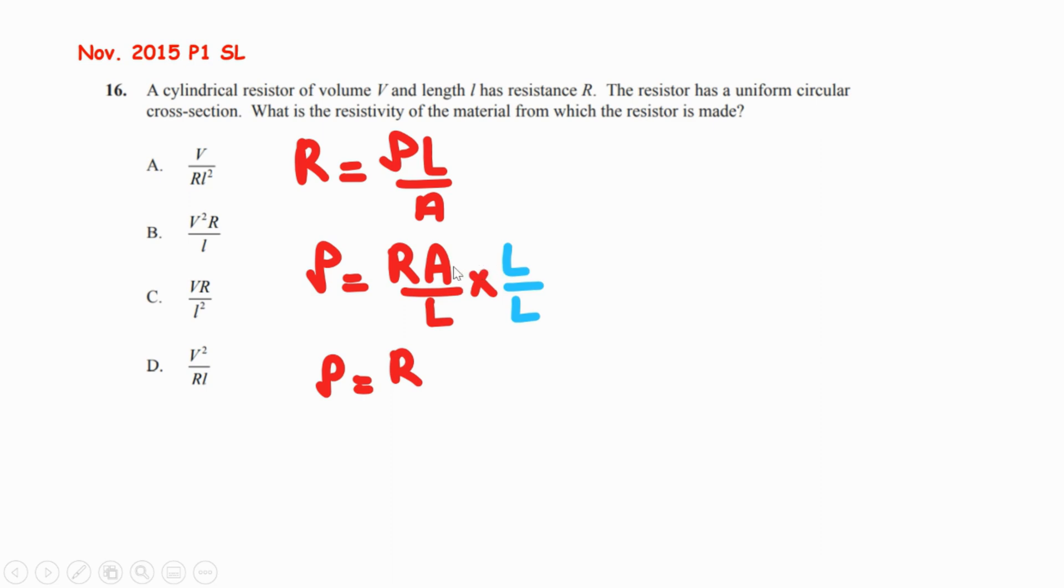The cross-sectional area times L, which is the volume, divided by L times L, which is L squared.